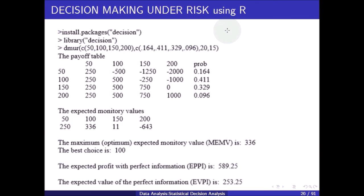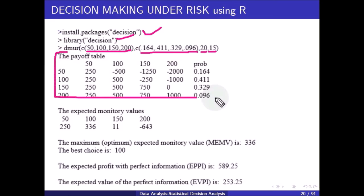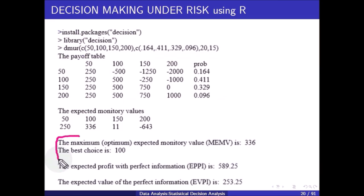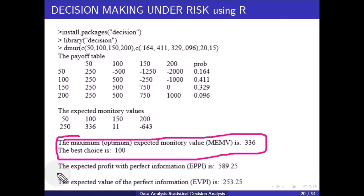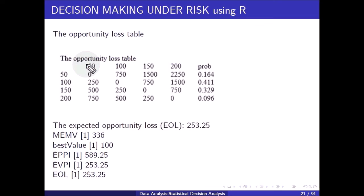Decision making under risk using R: install and call the 'decision' package, input consumptions, preparations, and probabilities, along with selling price and preparation cost to build the payoff table. Results: maximum optimal EMV = 336 with best value at 100 sweets; EPPI = 589.25; EVPI = 253.25; EOL = 253.25 — all consistent with manual calculations.